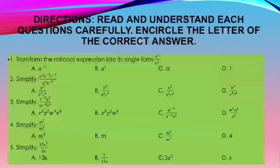Now it's your turn. Directions: Read and understand each question carefully. Encircle the letter of the correct answer. Number 1: Transform the rational expression into its single form — a to the power of 3 over a to the power of 4. Choices: A. a to the power of negative 1, B. a to the power of 1, C. a, D. 1.